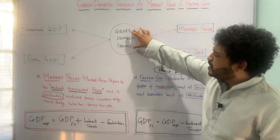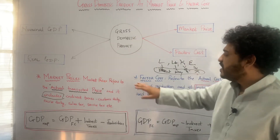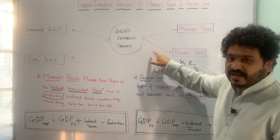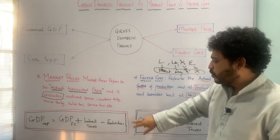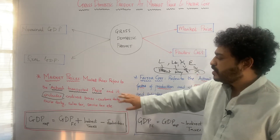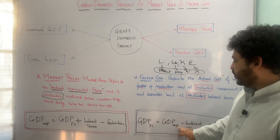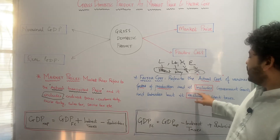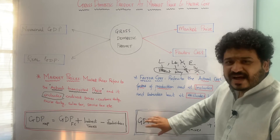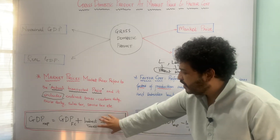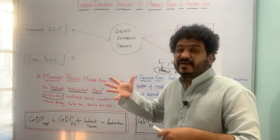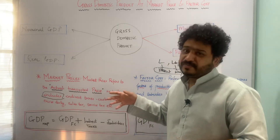GDP is calculated using both market prices and factor cost, giving us GDP at market price and GDP at factor cost. GDP at factor cost excludes indirect taxes and includes government grants and subsidies. In upcoming classes we will look at how to calculate GDP in greater detail, including transfer payments such as pensions and scholarships. Please stay tuned, thank you.